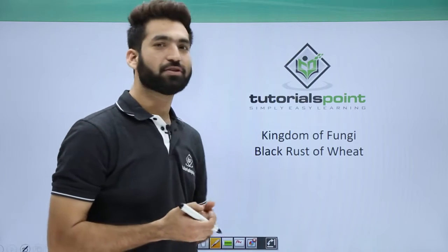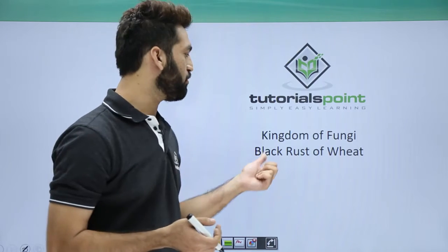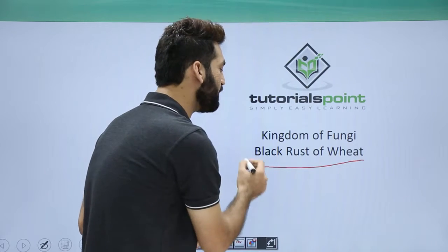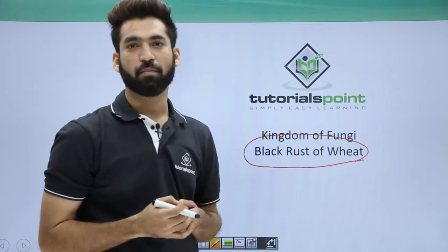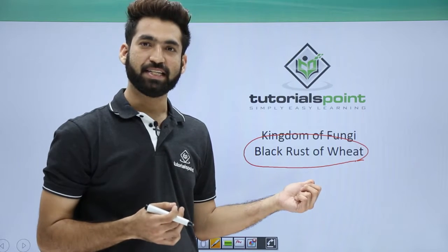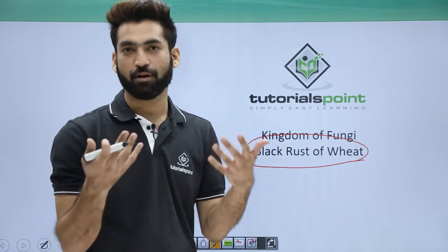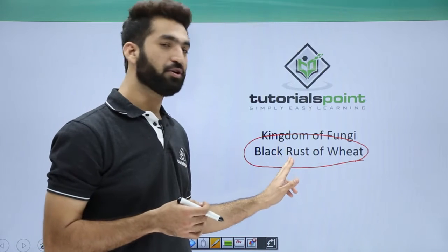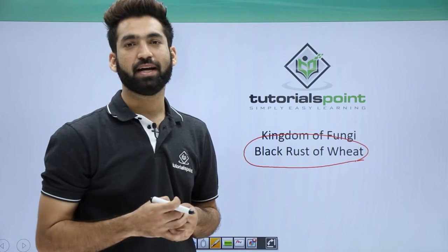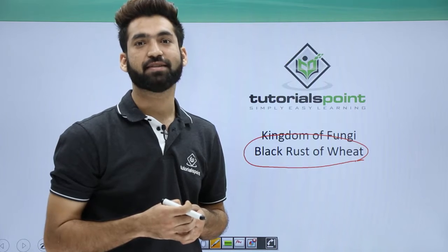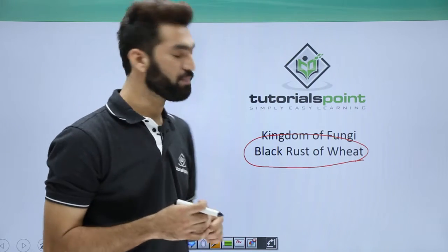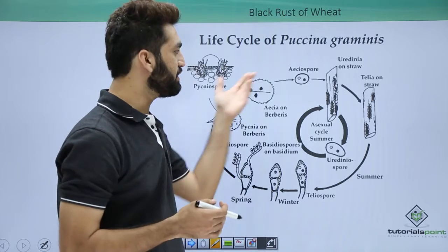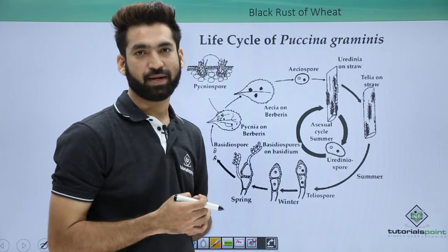In this session we will be discussing the life cycle of Puccinia, which causes black rust of wheat. This disease, which you must have seen in wheat, is very important. The life cycle of Puccinia was studied by an Indian scientist called Professor K.C. Mehta. K.C. Mehta is the person who worked upon the life cycle of Puccinia, and this is the life cycle I have showed you.